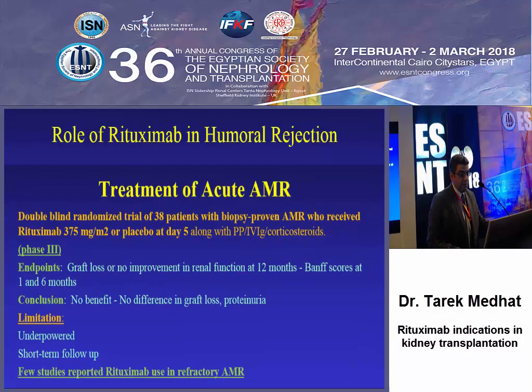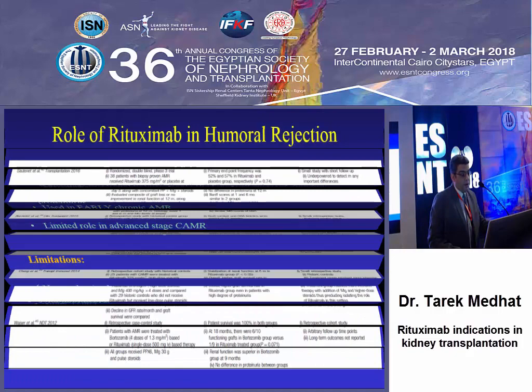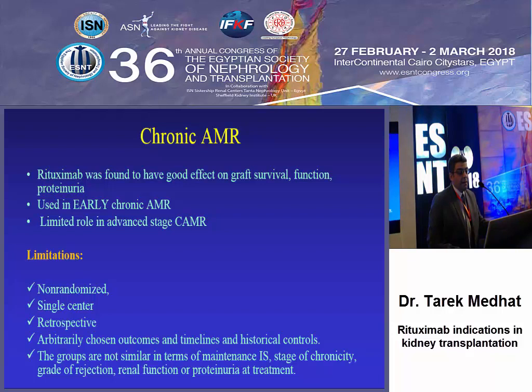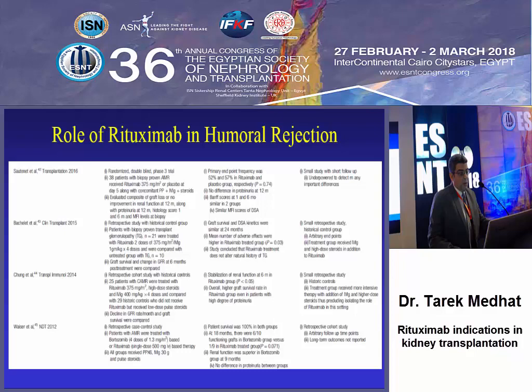Few studies have investigated the use of rituximab in refractory cases. There are many studies for its use in humoral rejection. It is used in chronic antibody-mediated rejection, with some beneficial effect on graft survival, function, and histology, but it does not reach the level of evidence-based recommendation. It has a limited role if used late in an advanced stage. Retrospective studies show better outcomes when used early, but we cannot rely on it as sole treatment given different results in chronic stage and variable serum creatinine outcomes.